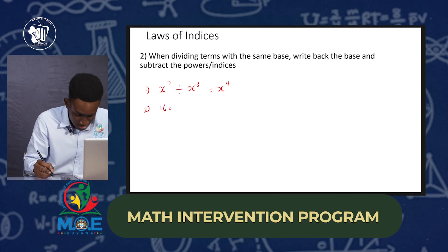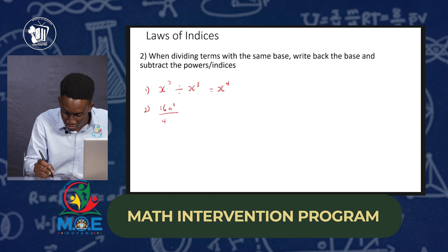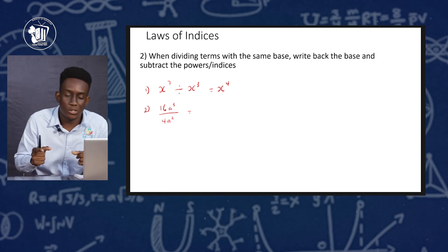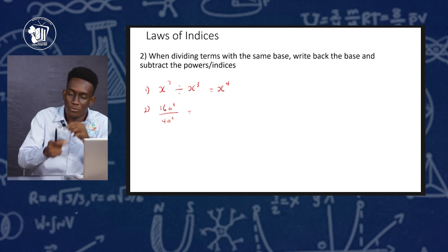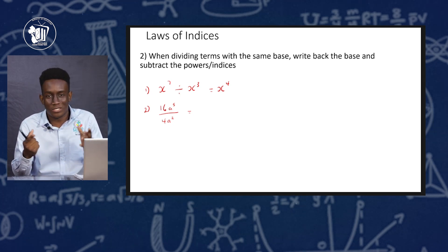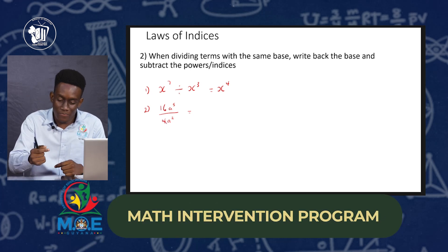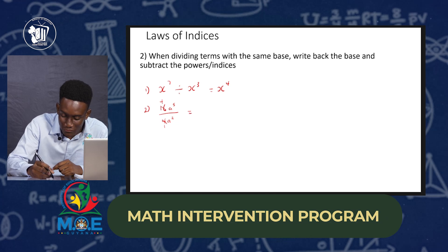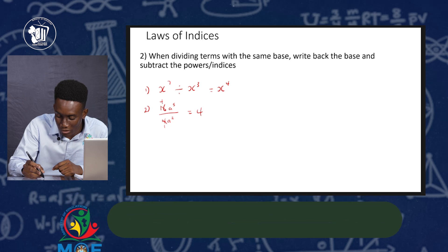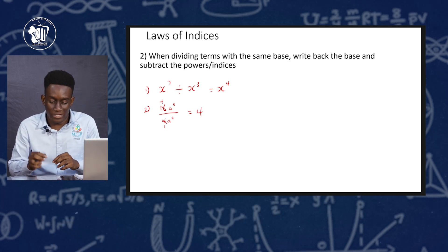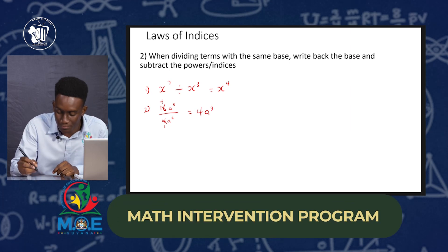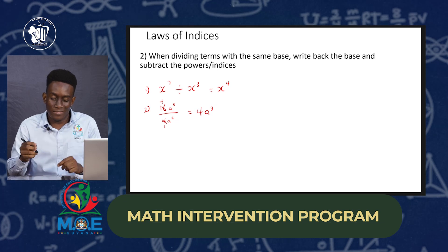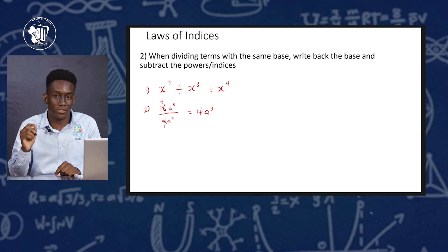Second example: 16a to the fifth divided by 4a to the second. Just as with multiplication, we divide the signs first — positive divided by positive gives a positive. Then divide the numbers: 16 divided by 4 gives us 4. Now a to the fifth divided by a to the second — the bases are the same, so we write back the base and subtract: 5 minus 2 gives us 3. So 16a⁵ ÷ 4a² gives us 4a³.